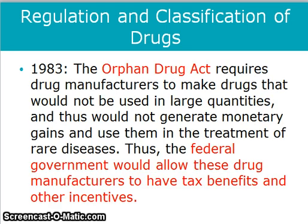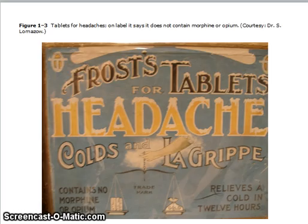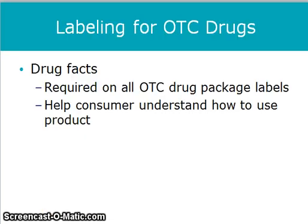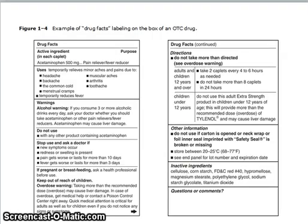In 1983, the Orphan Drug Act was passed. An orphan drug is one that is used in the treatment of rare diseases. Therefore, manufacturers and researchers do not have a financial interest in researching that drug because not many people can avail themselves of the medication. The federal government allows these drug manufacturers to have tax benefits and other incentives to research drugs for orphan diseases. Over-the-counter drugs are required to have drug package labels that help the consumer understand how to use the product.